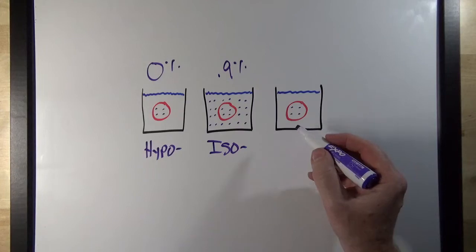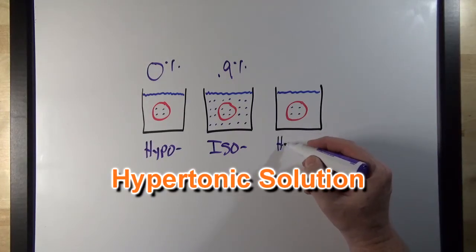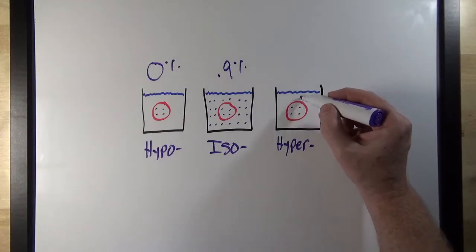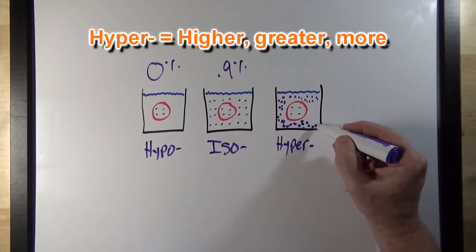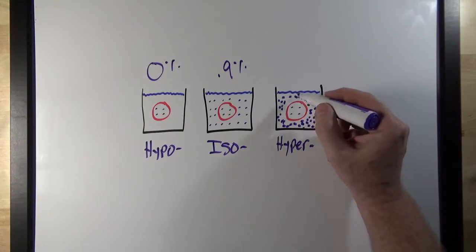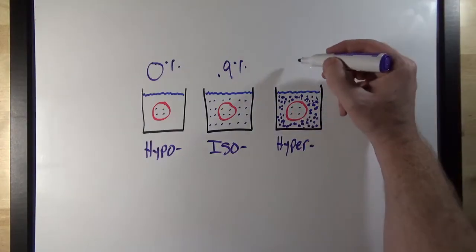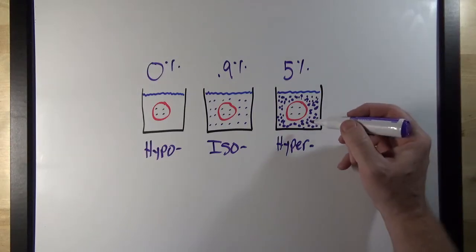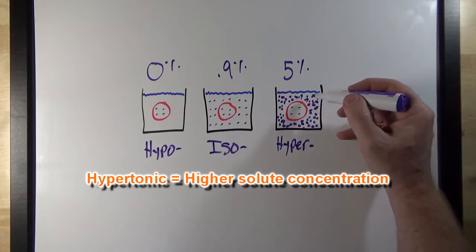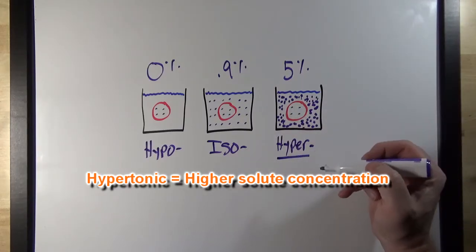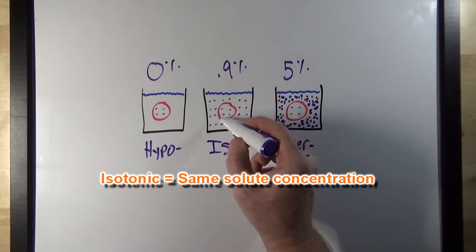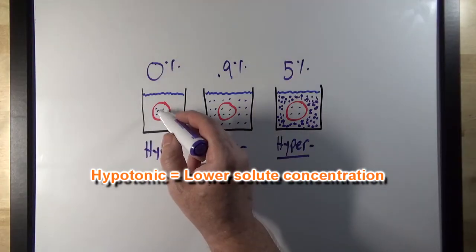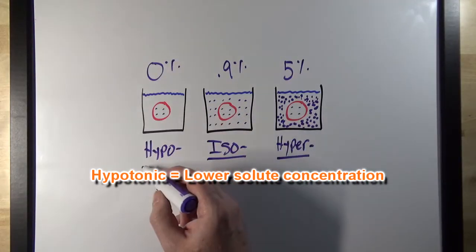In this example over here, I'm going to draw a hypertonic solution. In a hypertonic solution, we're going to have a higher solute concentration than what's inside the red blood cell — I'll represent that like this, with higher solute concentration on the outside of the cell. This would be an example of a 5% salt solution. So: hypertonic indicates a higher solute concentration outside the cell, isotonic means the same solute concentration, and hypotonic means a lower solute concentration outside the cell.